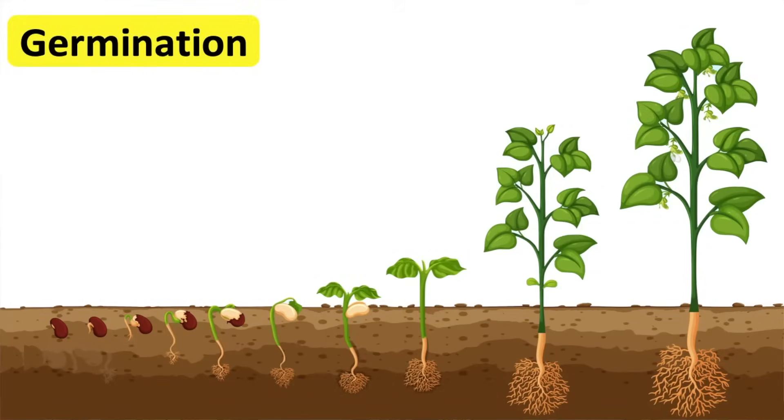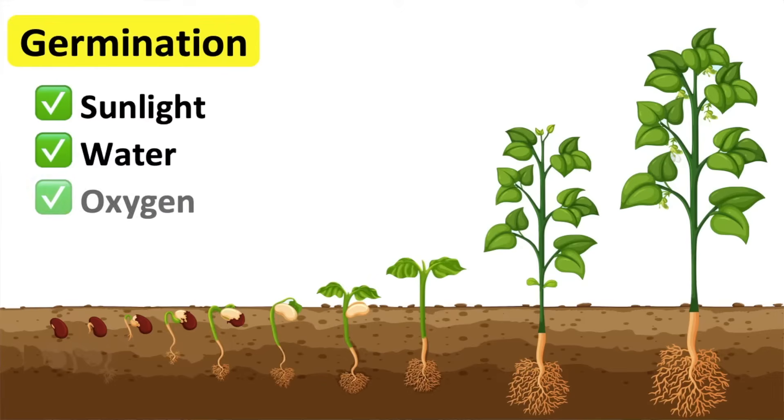Germination is the process in which the seed begins to develop into a new young plant. This process is controlled by enzymes. There are a few factors required for the plant to grow: sunlight, water, oxygen, and warm temperature.